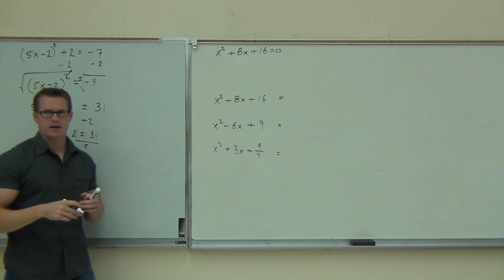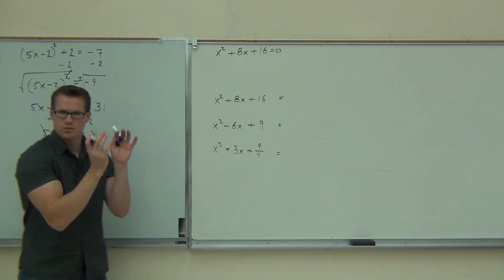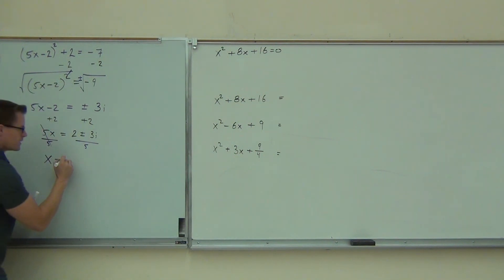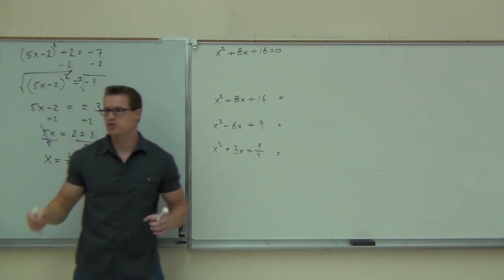It does give us our two solutions because of the plus or minus. But we also want to write it like we write any other complex number, which is the real part, plus or minus imaginary part. That's our 2 fifths plus 3 fifths i. That's the first one, 2 fifths plus 3 fifths i. And 2 fifths minus 3 fifths i. Notice how the number in front does not change its sign ever.